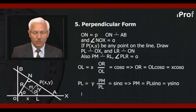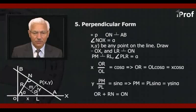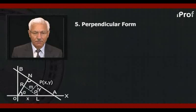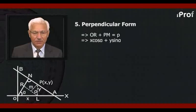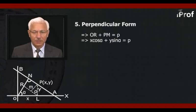Hence, OR plus RN is equal to ON. OR we have found is equal to x·cos alpha. PM is equal to RN, therefore RN is equal to y·sin alpha. Hence, OR plus PM equals P. That is, x·cos alpha plus y·sin alpha is equal to P, which is the equation in normal form or perpendicular form.